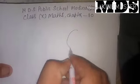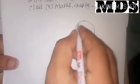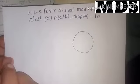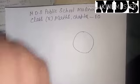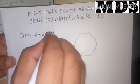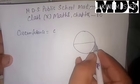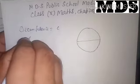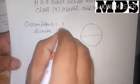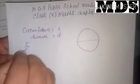Take a circle and measure its boundary length by placing a thread along it, then measure that thread with a scale — this gives you the circumference C. The line segment passing through the center of the circle is called the diameter D. Now measure D with a scale as well.